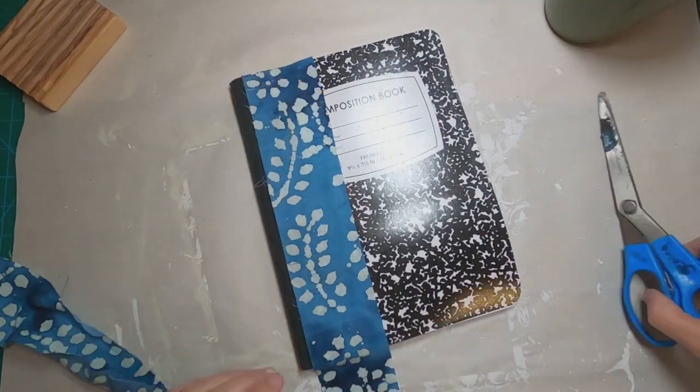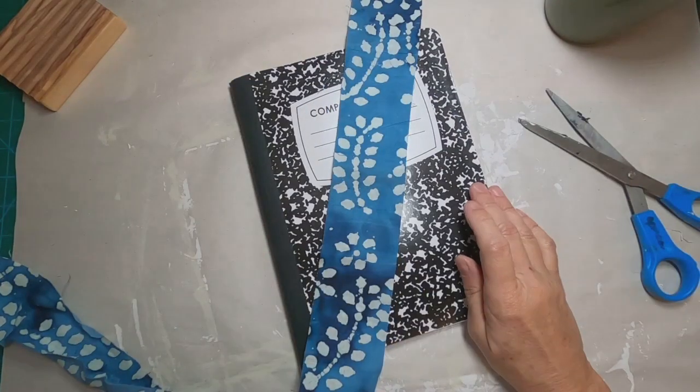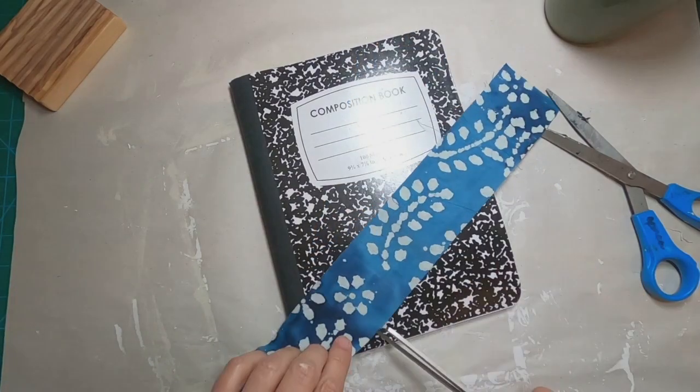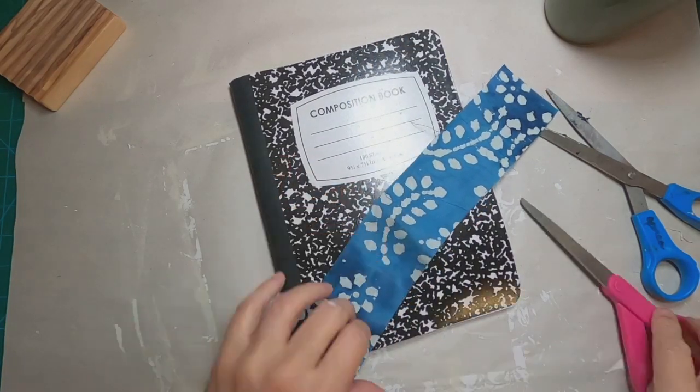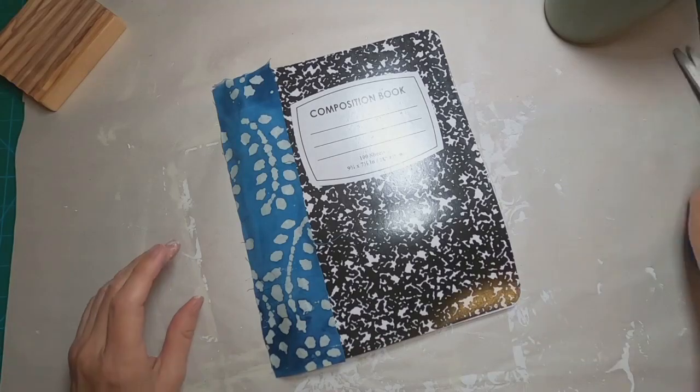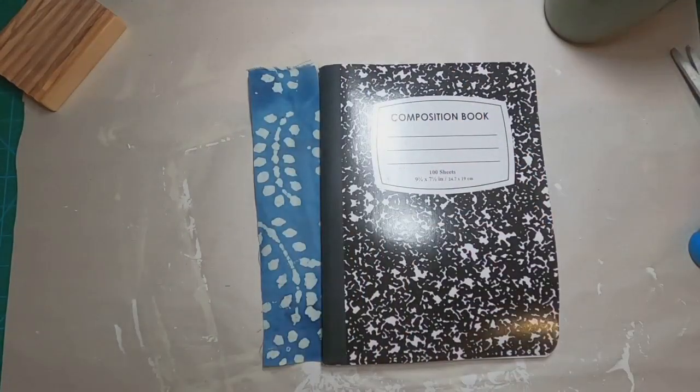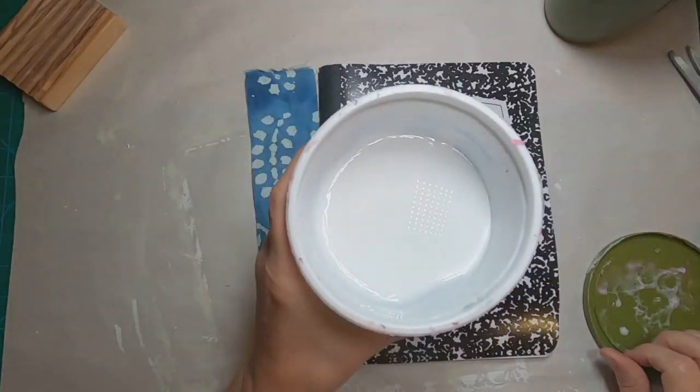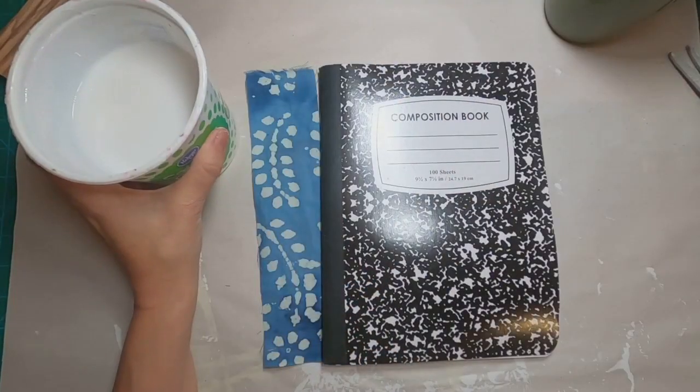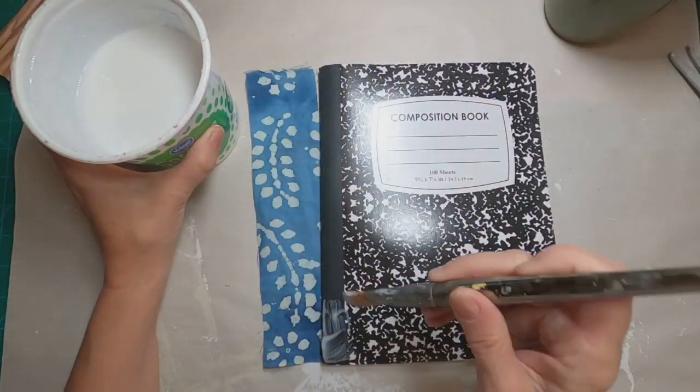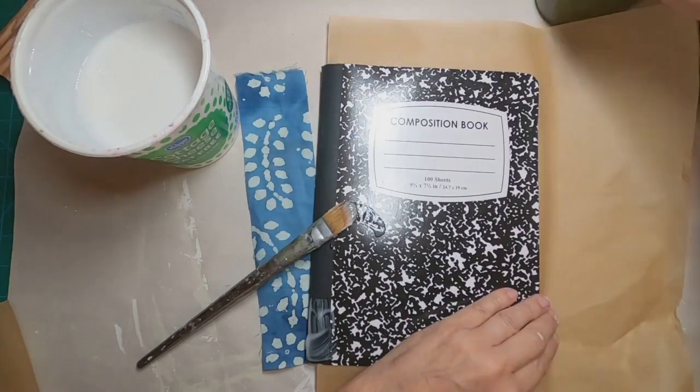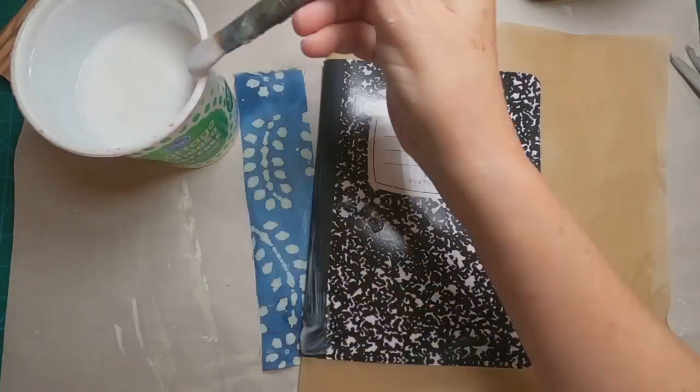I'm going to begin by covering the spine on this inexpensive composition notebook with some fabric from my stash. I have ironed the fabric to remove all the wrinkles, cut to the height of the journal, and I'm placing it with a mixture of water and glue into place on the spine.